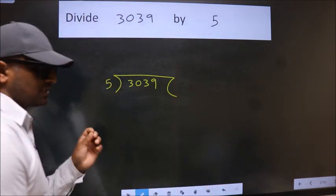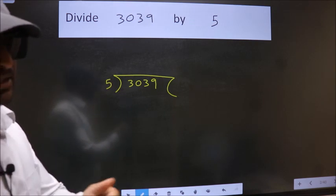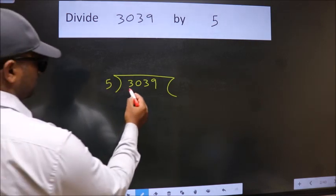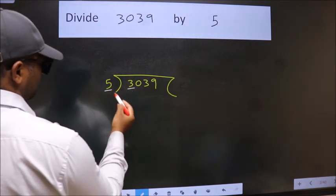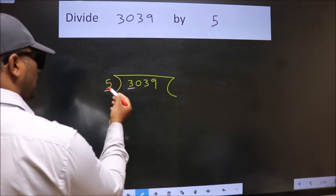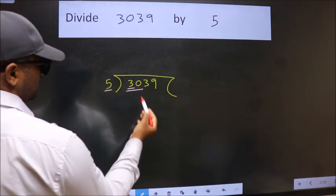This is your step 1. Next, here we have 3, here 5. 3 is smaller than 5, so we should take two numbers: 30.